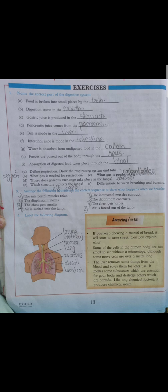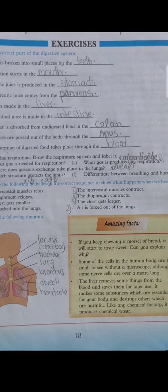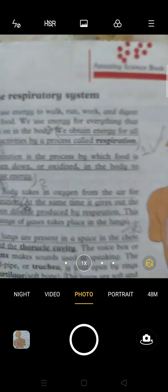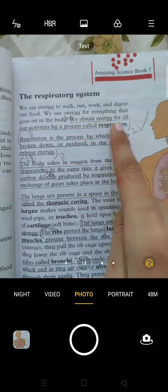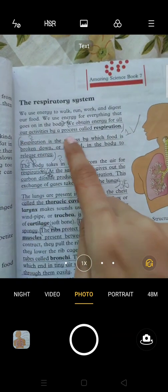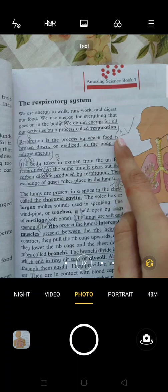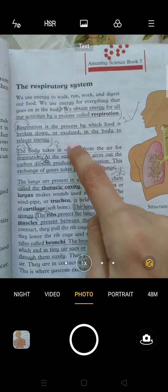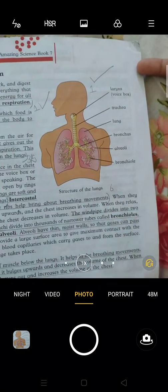and your nutrients. Next, question 2 is: define respiration, draw the respiratory system and label it. It is on page 15. Here is the respiratory system. This is the definition: we obtain energy for all our activities by a process called respiration. Respiration is the process by which food is broken down or oxidized in the body to release energy. I explained oxidation in my previous video. This is the diagram you have to draw with this question.